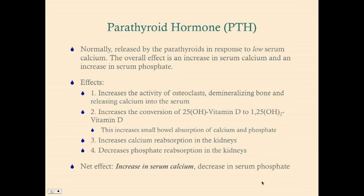Parathyroid hormone is normally released by the parathyroids in response to low serum calcium. Its effects are: (1) increased osteoclast activity, demineralizing bone and releasing calcium into the serum; (2) indirect increase in calcium via conversion of 25-hydroxyvitamin D to 1,25-dihydroxyvitamin D (calcitriol), increasing small bowel absorption of calcium and phosphate; (3) increased calcium reabsorption in the kidneys; and (4) decreased phosphate reabsorption in the kidneys. The net effect is increased serum calcium and decreased serum phosphate.